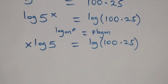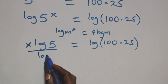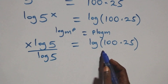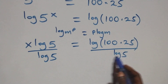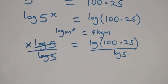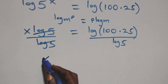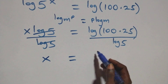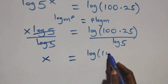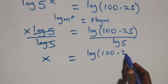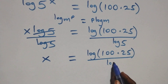From here we divide both sides by log 5. We divide this side by log 5 and also divide this side by log 5, which implies the log 5 terms cancel each other, and we have x equals log of 100 times 25 over log 5.